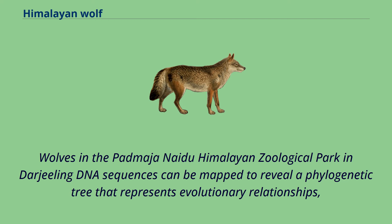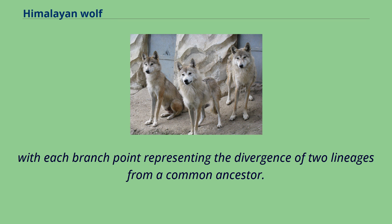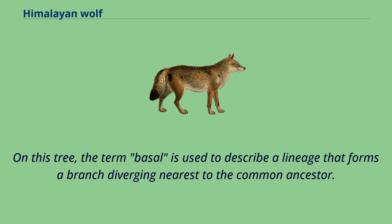DNA sequences can be mapped to reveal a phylogenetic tree that represents evolutionary relationships, with each branch point representing the divergence of two lineages from a common ancestor. On this tree, the term 'basal' is used to describe a lineage that forms a branch diverging nearest to the common ancestor.